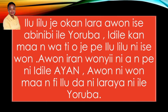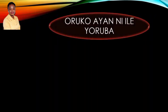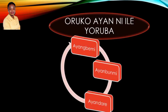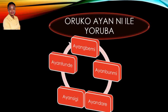Drumming is one of the traditional occupations in Europe. There are some families that are known for drumming and they are called Anyo. That is how we give them names such as Anyo Gbemi, Anyo Bumi, Anyo Dari, Anyo Shiji, Anyo Tunde, Anyo Funke, Anyo Gbemi, Anyo Sheyi.